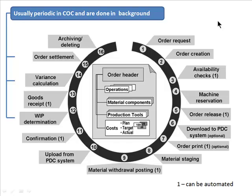This is the whole process in general — a more detailed explanation than the rudimentary one given earlier. Some of the steps marked here, such as availability checks, order release, order printing, and material withdrawal posting, can be automated. One common example of automating material withdrawal posting is what's called the backflush mechanism.